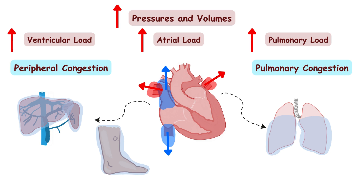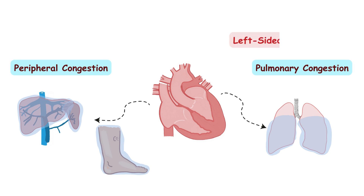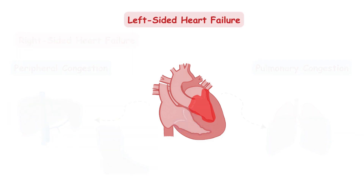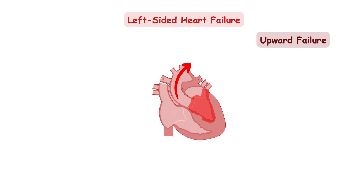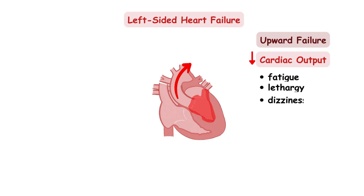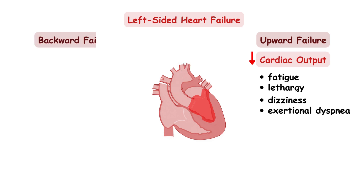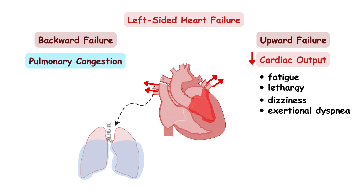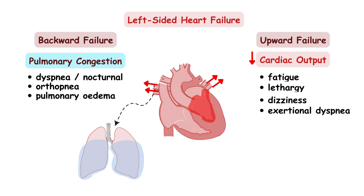Clinical manifestations can be classified into those following left-sided and right-sided heart failure. With left-sided heart failure, we have forward failure and backward failure. Forward failure — symptoms resulting from low cardiac output — presents with fatigue, lethargy, dizziness, and exertional dyspnea. Backward failure — blood backing up into the lungs, leading to pulmonary congestion — presents with shortness of breath, dyspnea, orthopnea, nocturnal dyspnea, pulmonary edema, nocturia, and oliguria. This buildup of fluid into the lungs causes crackles, a clinical sign detectable on auscultation during examination.